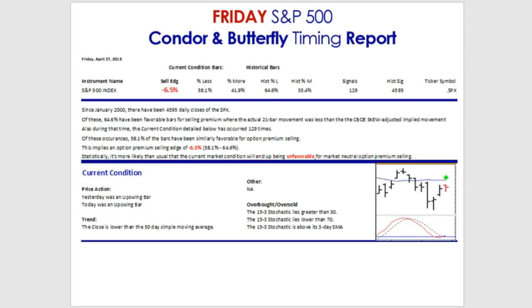Does it mean you would lose money? Well, 58% of the time historically it's worked out, so you might still catch some of that 58%. But relative to the historical benchmark of S&P behavior, we're in a time where it looks more likely than normal to be unfavorable.